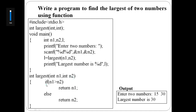In the function body, if n1 is greater than n2, return n1; else return n2. This returns the largest number. Since n1 and n2 are integers, the return type is int.